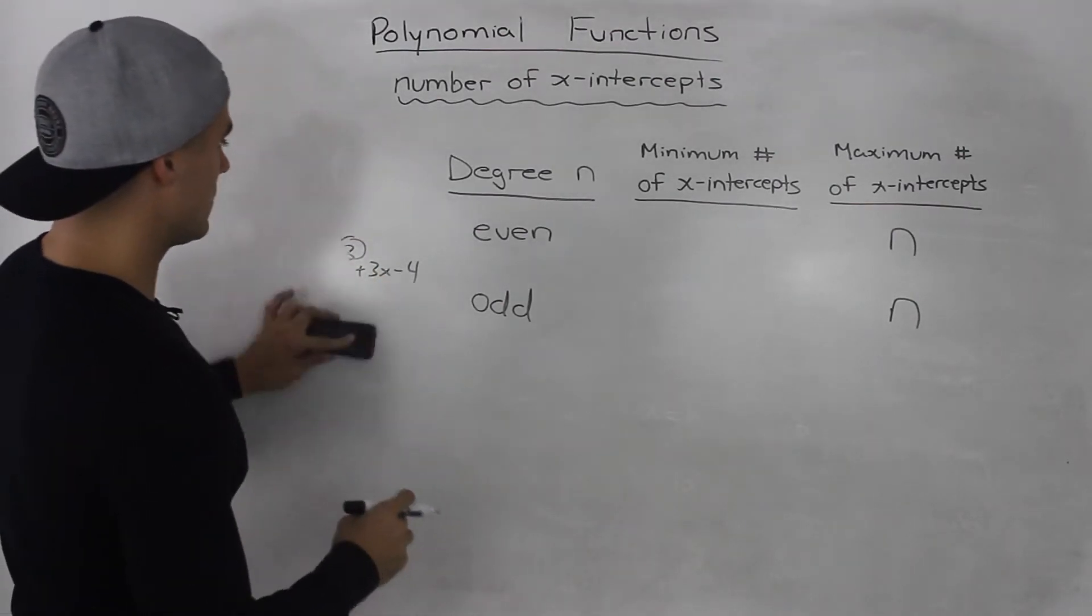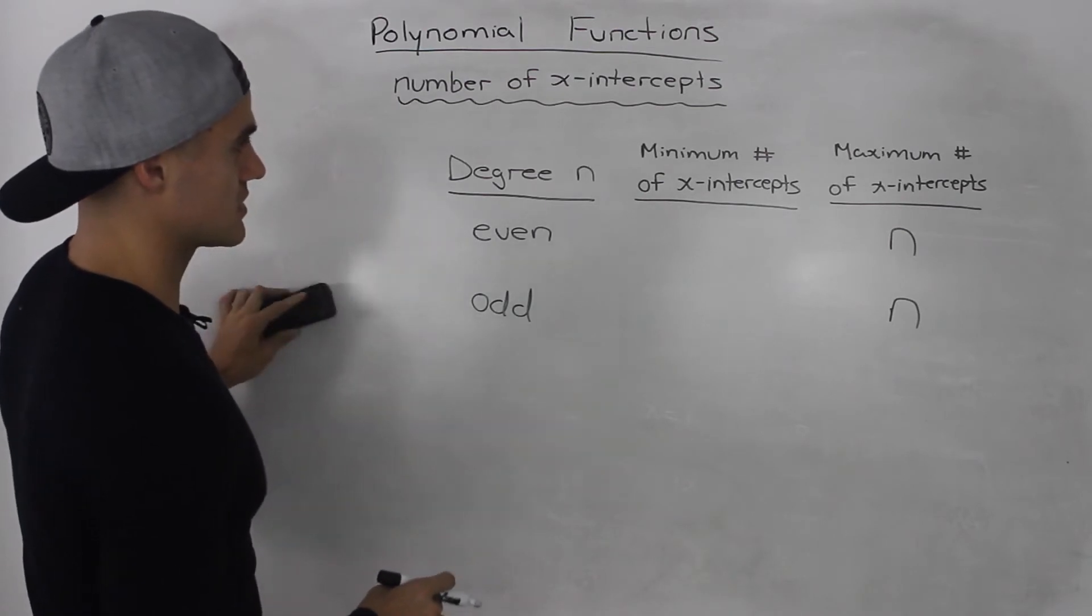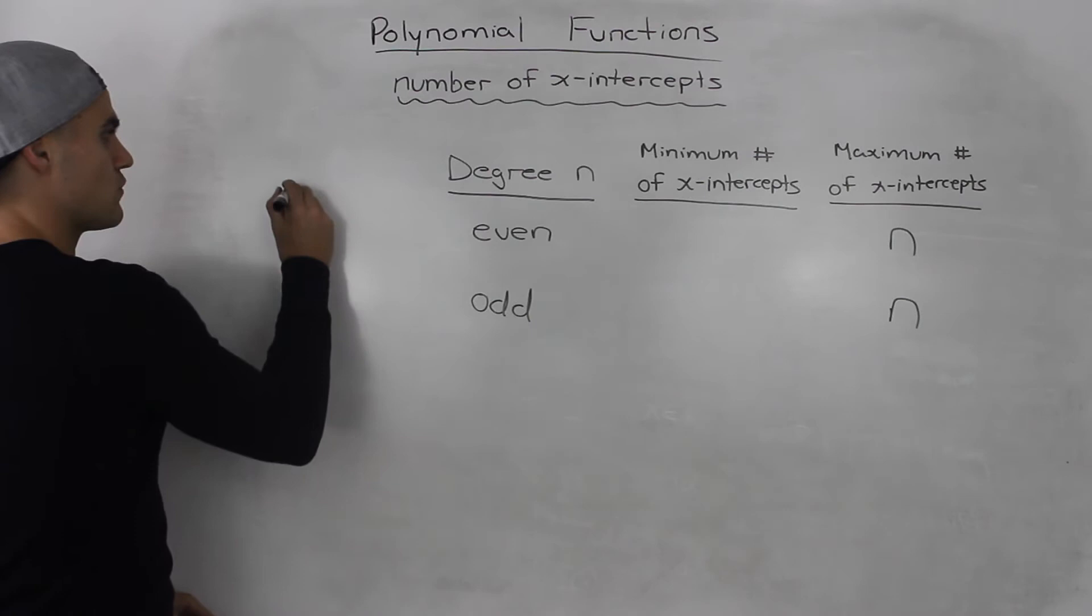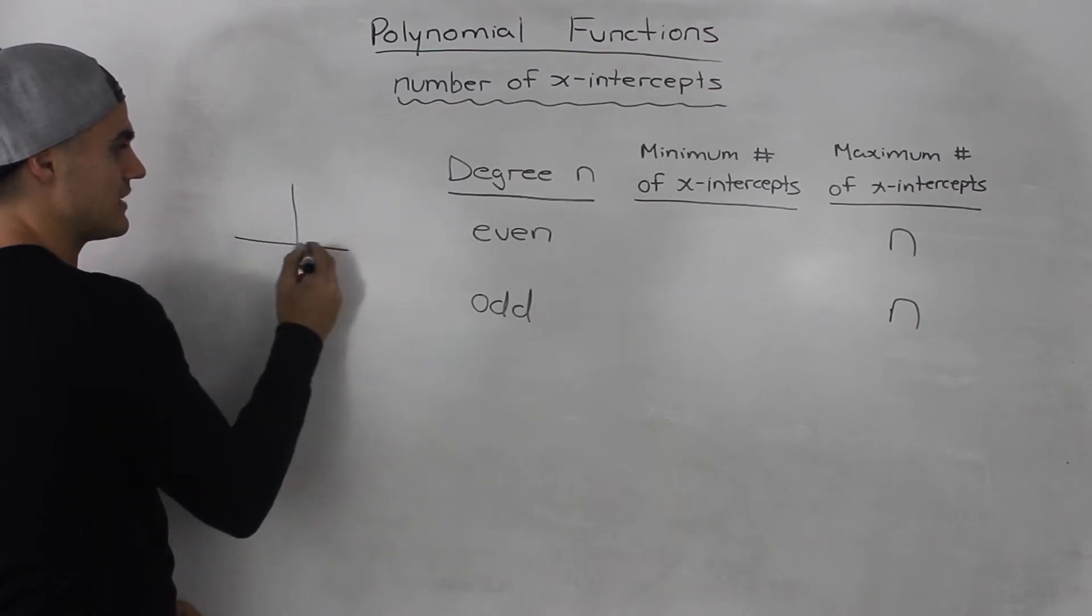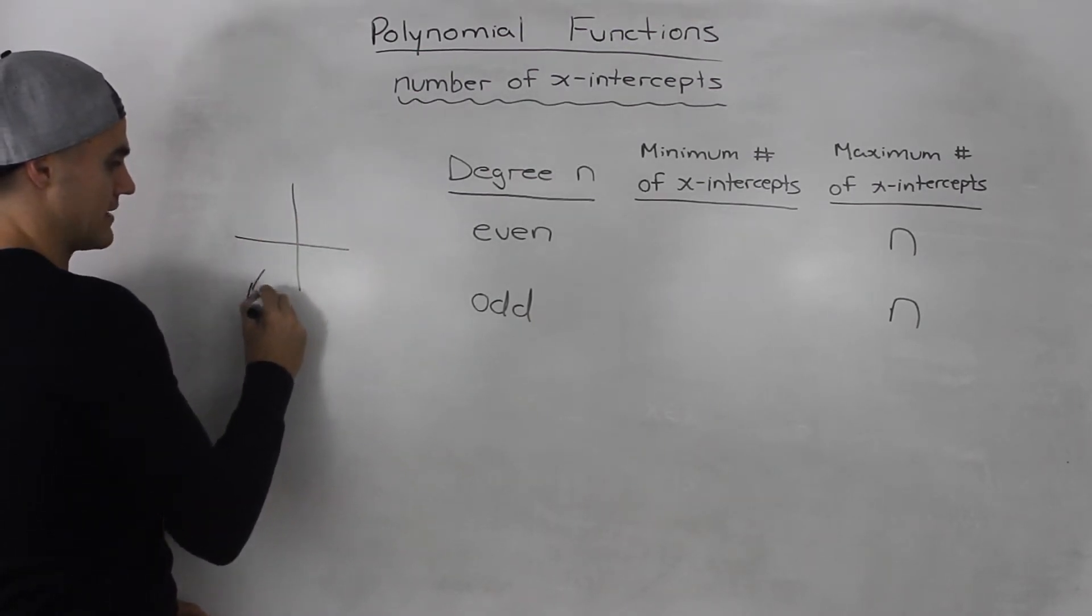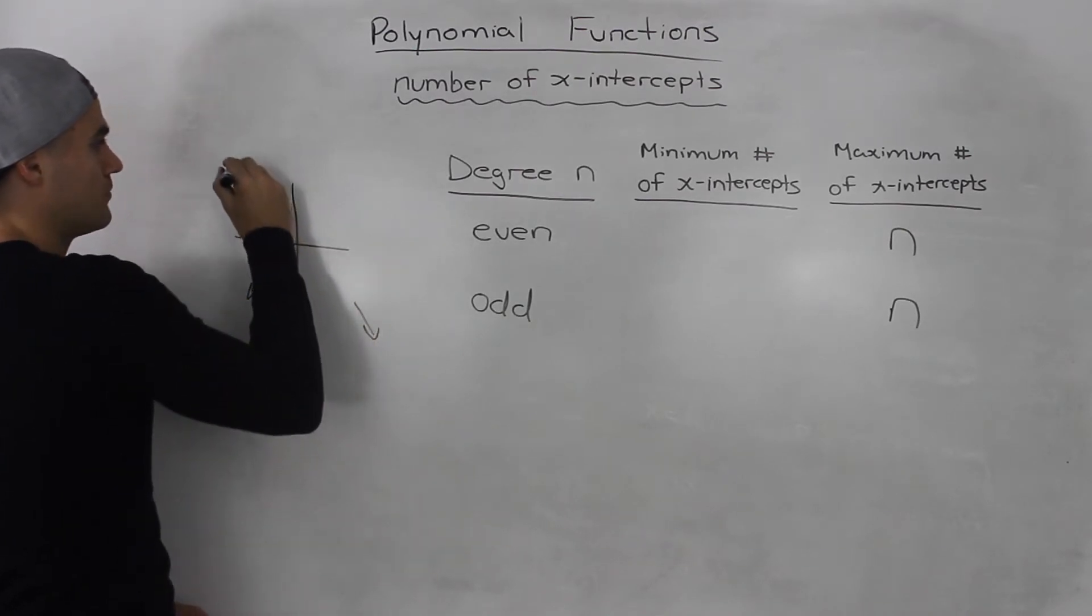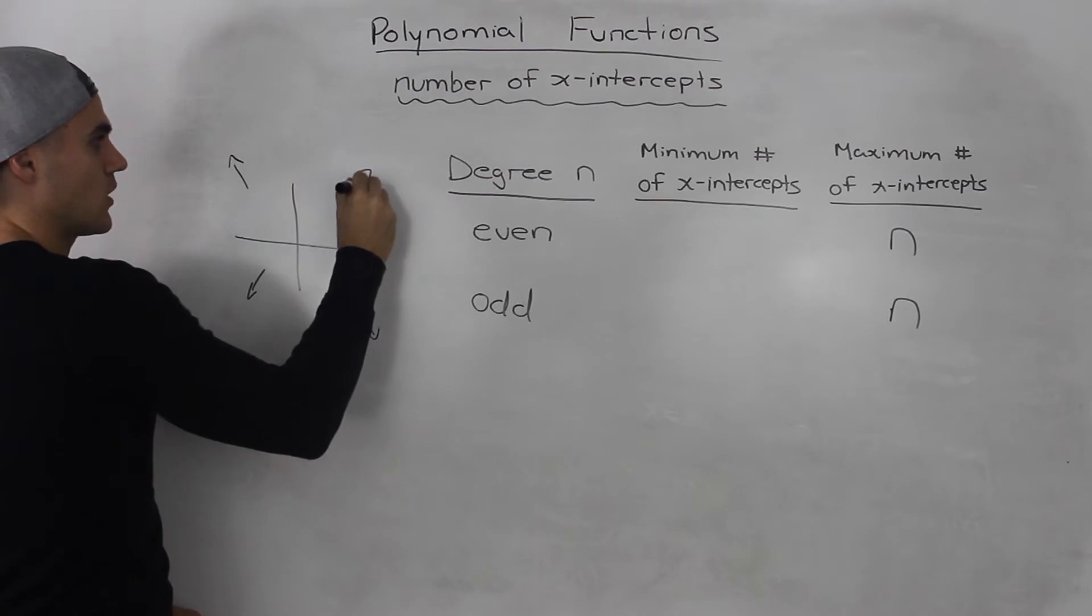Now the minimum number of x-intercepts depends on whether it's even or odd. If you think about it, an even function always has end behavior that begins in quadrant 3 and ends in quadrant 4, or begins in quadrant 2 and ends in quadrant 1.